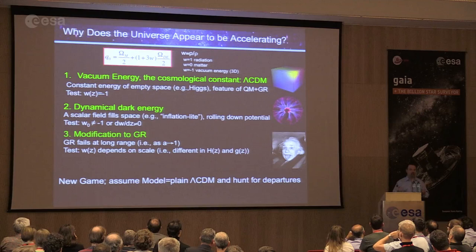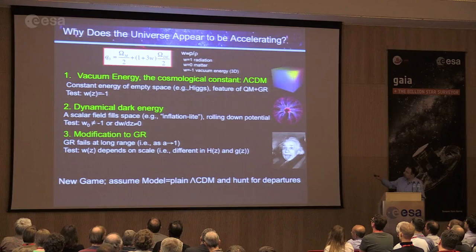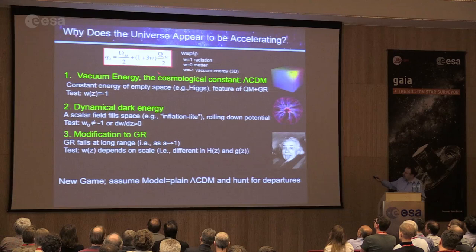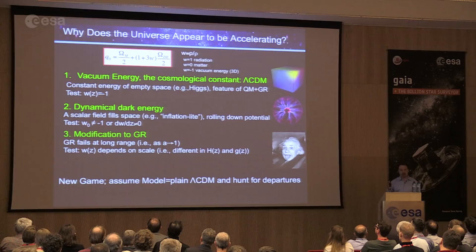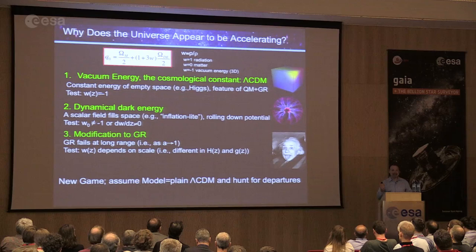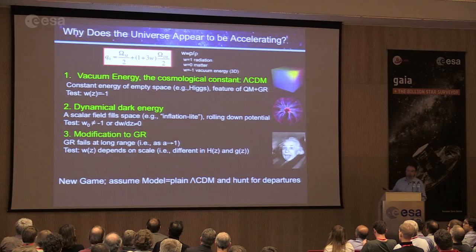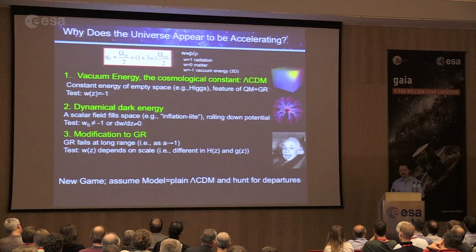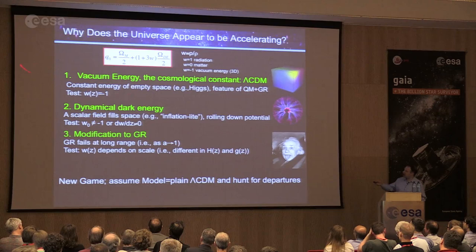Einstein worked on the cosmological constant for the wrong reason — thinking attraction and repulsion would balance to keep the universe static — but later learned the universe was expanding. The best idea for dark energy comes from quantum mechanics, which predicts vacuum energy. It's impossible to empty space of everything including energy. The Higgs field is one example of this dark energy contribution. There is, however, a problem of about 120 orders of magnitude between what particle physicists calculate it should be and what we observe.